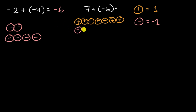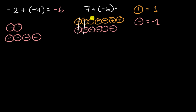So we have negative one, negative two, negative three, negative four, negative five, and negative six. Now we can use the fact that a positive and a negative integer chip cancel out — positive one plus negative one equals zero. So those cancel, those add up to zero, those add up to zero, those add up to zero, those add up to zero, those add up to zero. So you have a bunch of zeros and then one positive chip left over — that's going to be equal to one.